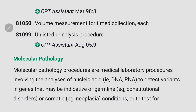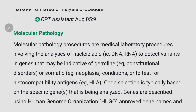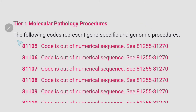Next is molecular pathology. The code range is 81170 to 81479. Molecular pathology procedures are medical lab procedures involving the analysis of nucleic acids such as DNA and RNA to detect variants in genes that may be indicative of germline conditions, or to test for histocompatibility antigens. Then we have Tier 1 molecular pathology procedures — gene-specific representing genomic procedures.